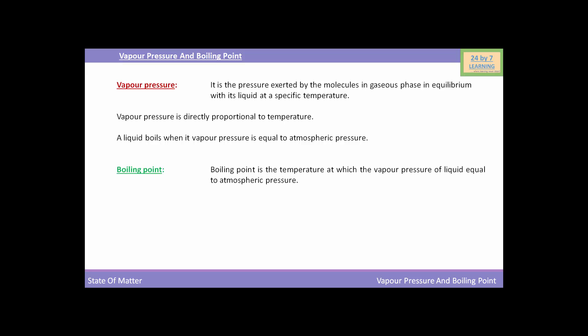Now, we are going to discuss boiling point. What is the boiling point of a liquid? Boiling point is the temperature at which the vapour pressure of a liquid equals the atmospheric pressure. When the atmospheric pressure is equal to the vapour pressure of water, the water will boil.